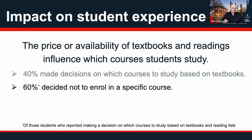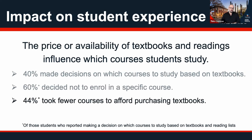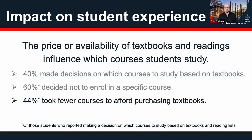Of that 40%, 60% decided not to enroll in a specific course because of the textbooks and readings that were set — they just wrote a course off based on the fact that it had a textbook. Again, of that 40% who made enrollment decisions, 44% took fewer courses in order to afford purchasing textbooks; they may have wanted to do closer to a full-time study load but couldn't afford purchasing all the required resources, so they self-reported as having taken fewer courses.